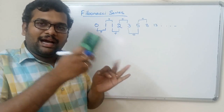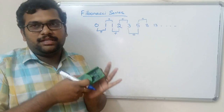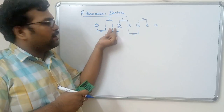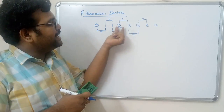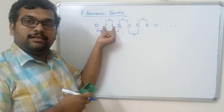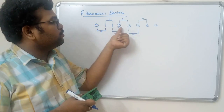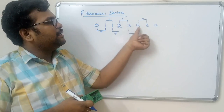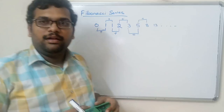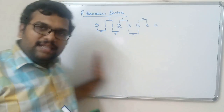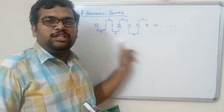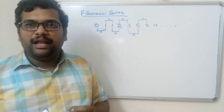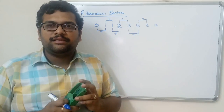To get the current number, we add the previous two numbers. Adding 0 and 1 gives 1; adding 1 and 1 gives 2; 2 plus 1 gives 3; and so on. We need to write a C program to display this Fibonacci series, taking an input n for how many elements should be printed.